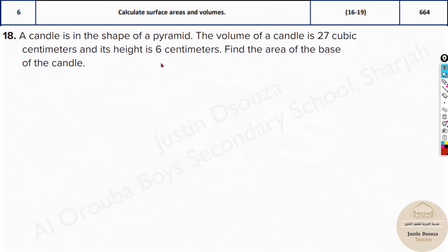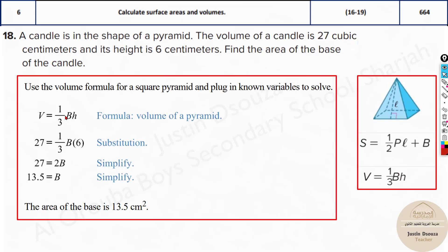Here we have another problem. A candle is in the shape of a pyramid. The volume of the candle is 27 cubic centimeters and its height is 6 centimeters. Find the area of the base of the candle. The volume formula is V = ⅓Bh, where B is the area of the base. Substitute all the values you know: 27 = ⅓B(6), and you will get the area of the base.